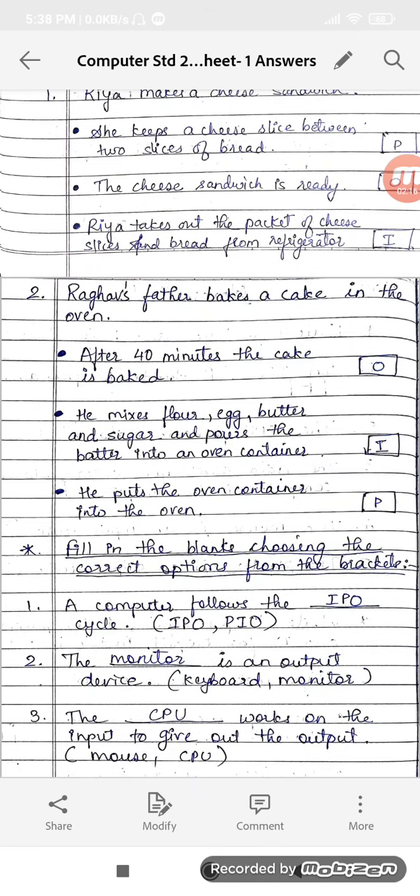Same with second one. Raghav's father bakes a cake in the oven. After 40 minutes the cake is baked. He mixes flour, egg, butter, and sugar and pours the batter into an oven container, and he puts the oven container into the oven.